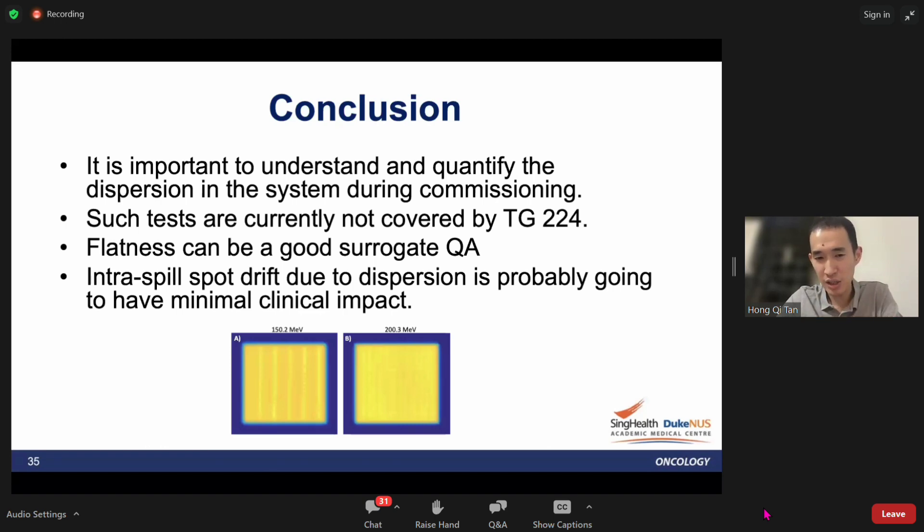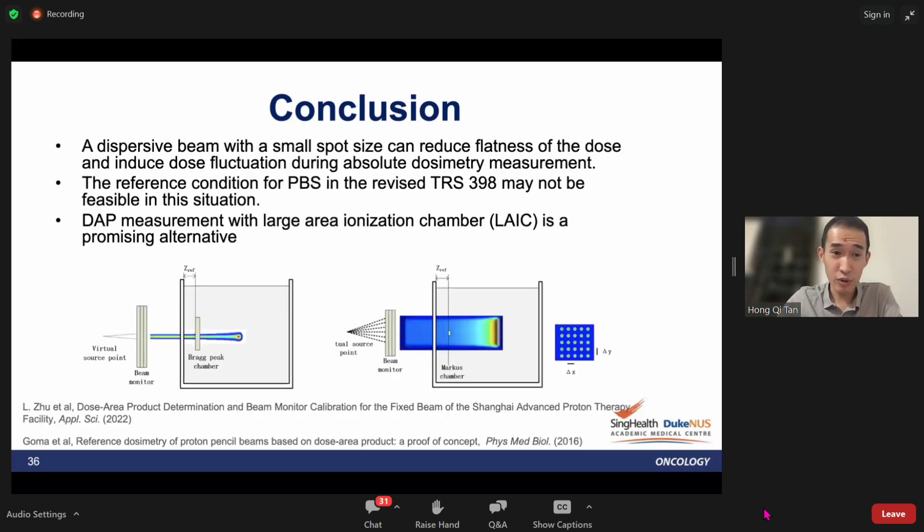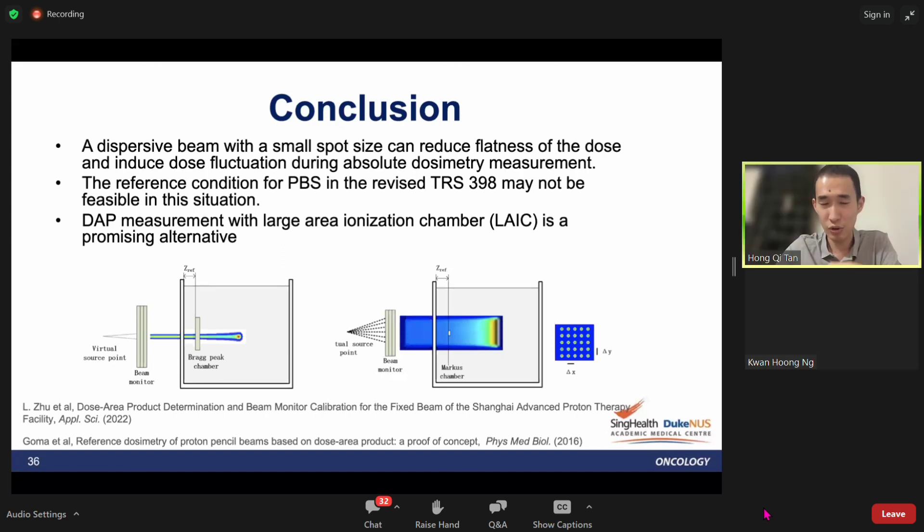The last point is the intra-spill spot drift chances are it has minimal clinical impact because during realistic clinical treatments at SOBP, the spot reaches about 4-5 mm sigma in water. With this spot width, if you have 0.5 mm spot drift, it doesn't change the dose distribution much. Nonetheless, the main problem is that dispersive beams induce dose fluctuations in your absolute or reference dosimetry measurement. You could introduce wrong input data into the TPS, which will have far-reaching consequences to the patients. That's why it's important to do this once during commissioning.